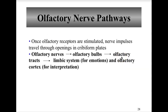In olfactory nerve pathways, you have a primary and a secondary neuron. The primary neuron is the olfactory receptor cell, whose axons pass through the cribriform plate of the ethmoid bone and synapse in the olfactory bulb. That leads to the secondary neuron in the olfactory bulb, which leads to cranial nerve one. The axon reaches the cerebral cortex but does not pass through the thalamus. The pathway includes olfactory nerves, olfactory bulbs, olfactory tracts, the limbic system for emotions, and the olfactory cortex for interpretation.